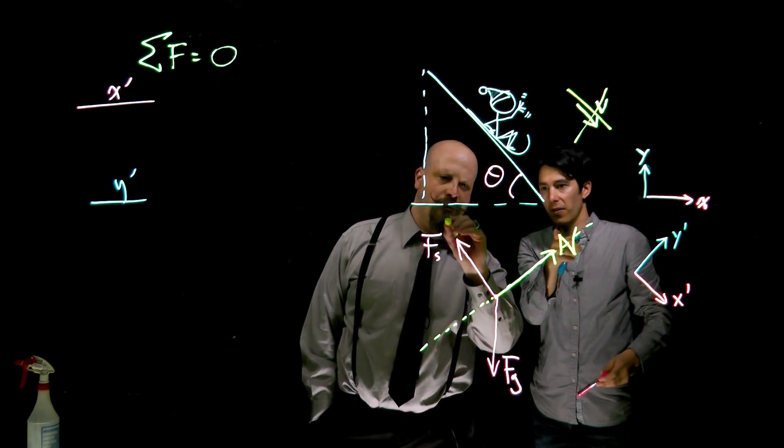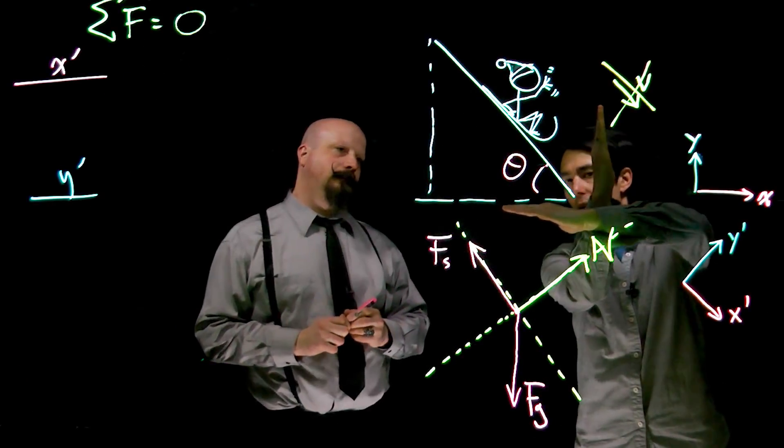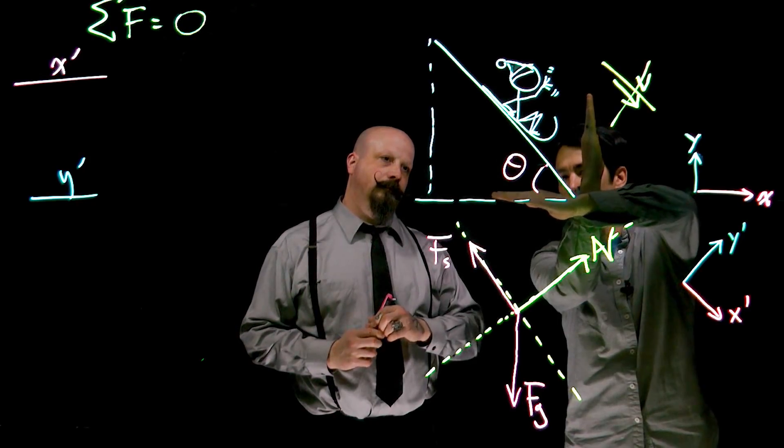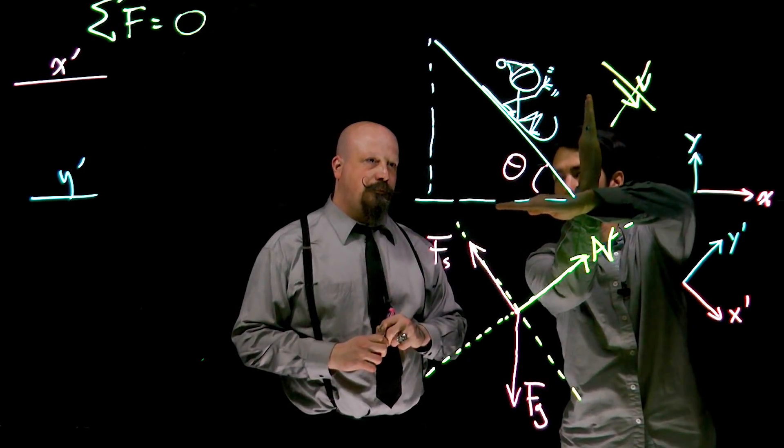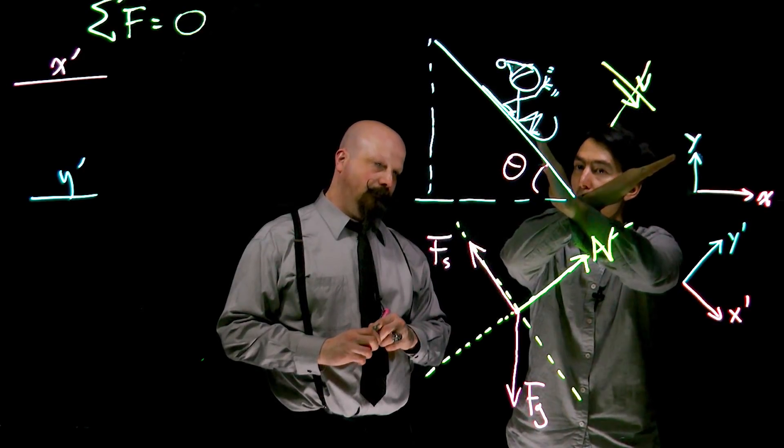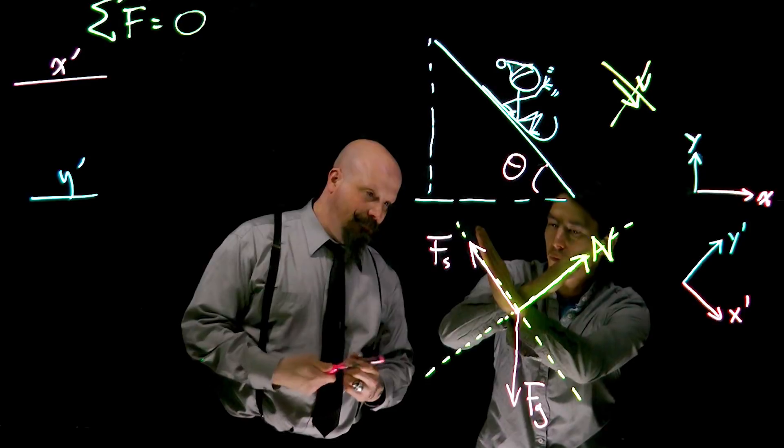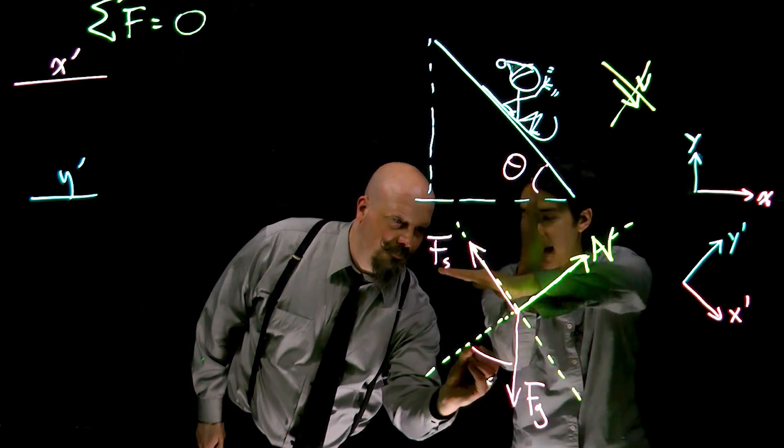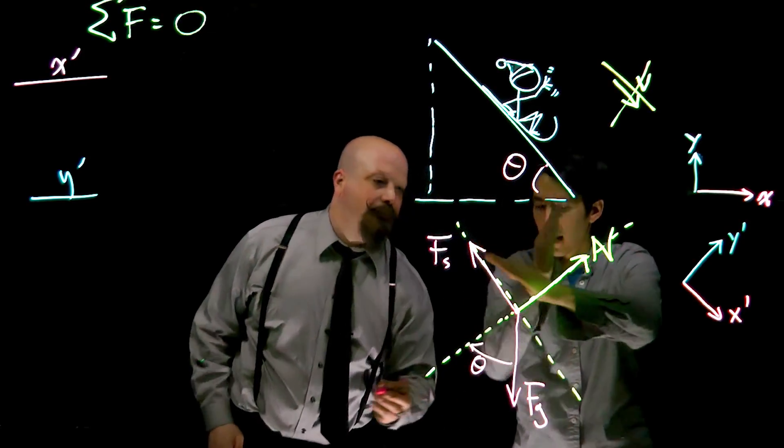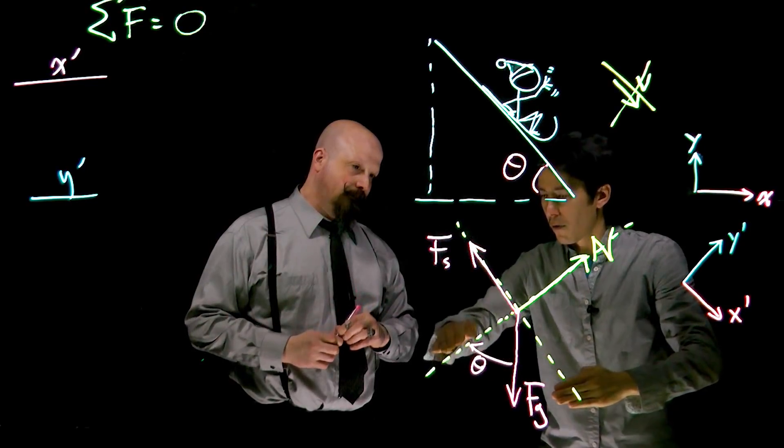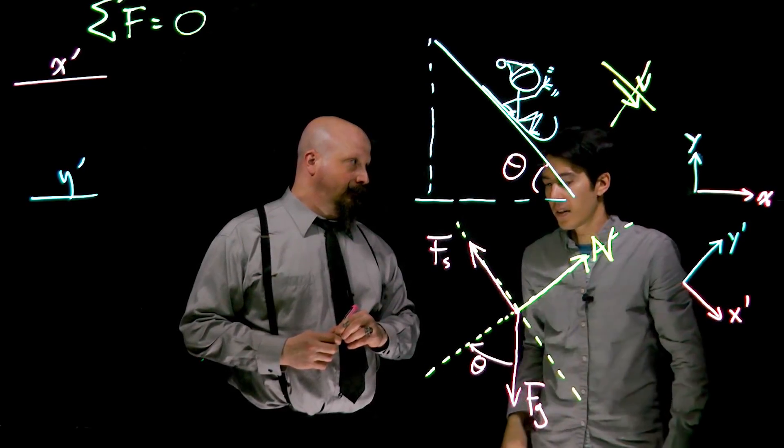So where does this angle theta come in? We started with horizontal and vertical x and y and we rotated through theta degrees. The x axis has come up by theta degrees, the y axis has come over by theta degrees. When we do this now you can see that we've rotated a y axis over by an angle theta, and that's taken from vertical over to the side, so our angle theta fits in here.